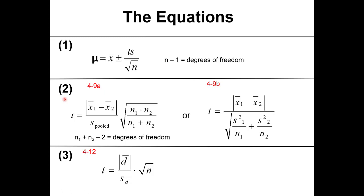For the Case 2 t-test comparing two mean values, we must first decide which equation to use. If the standard deviations agree to within experimental error — that is, the variances are equal — we use equation 4-9a. If the standard deviations are significantly different, we use equation 4-9b. Degrees of freedom for Case 2 is n₁ plus n₂ minus two.